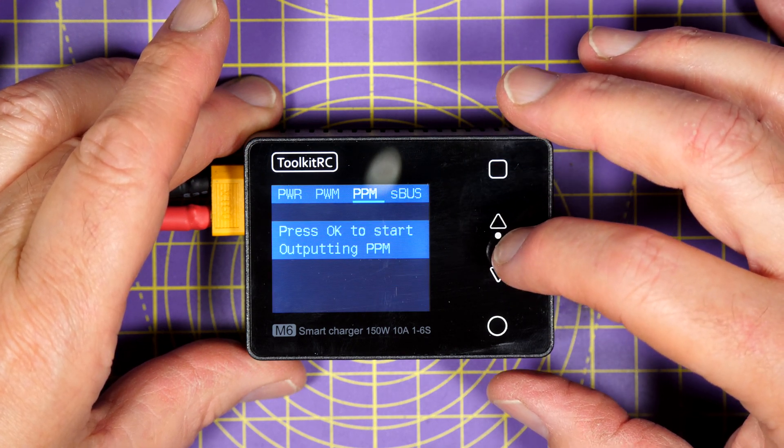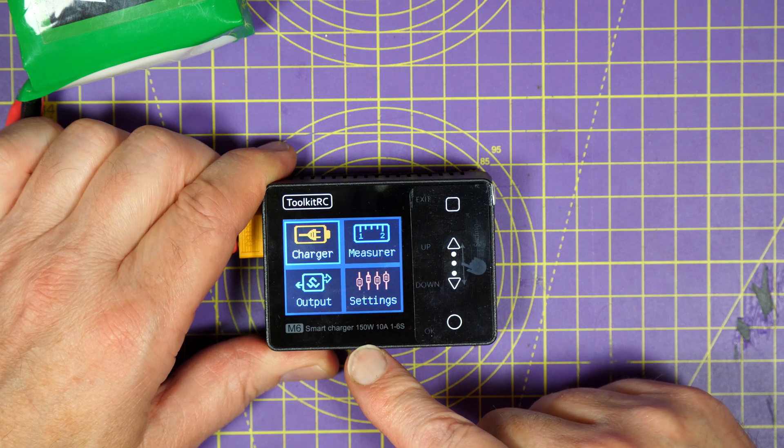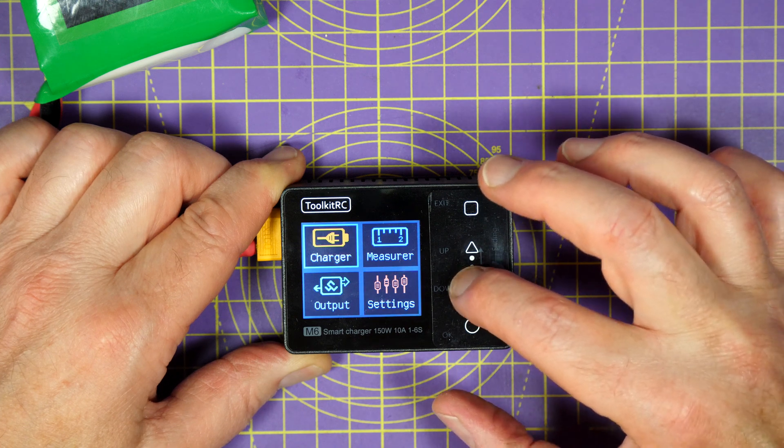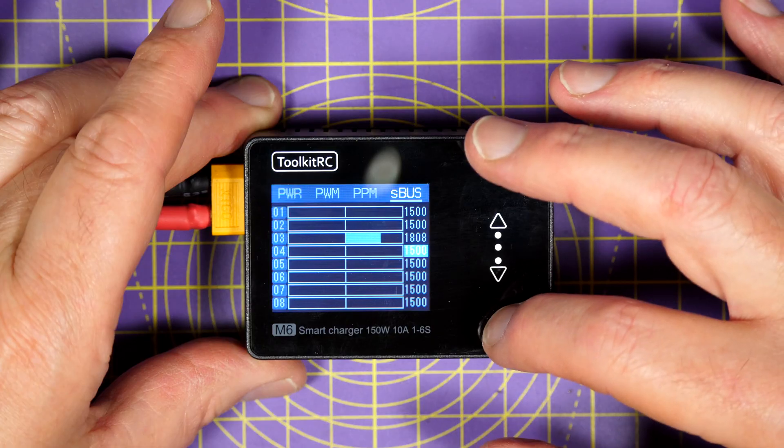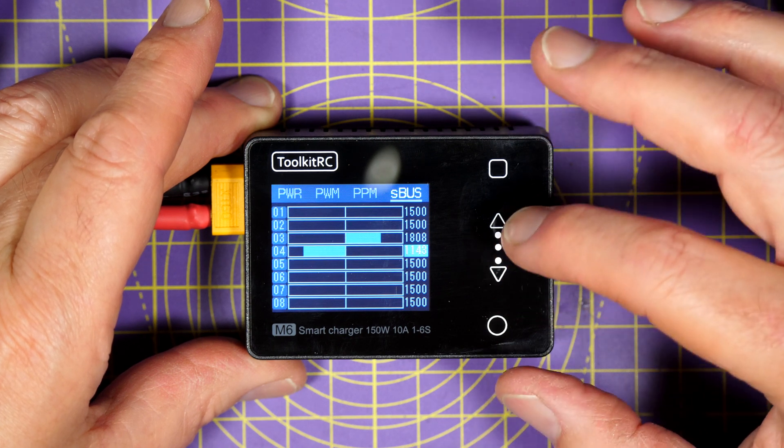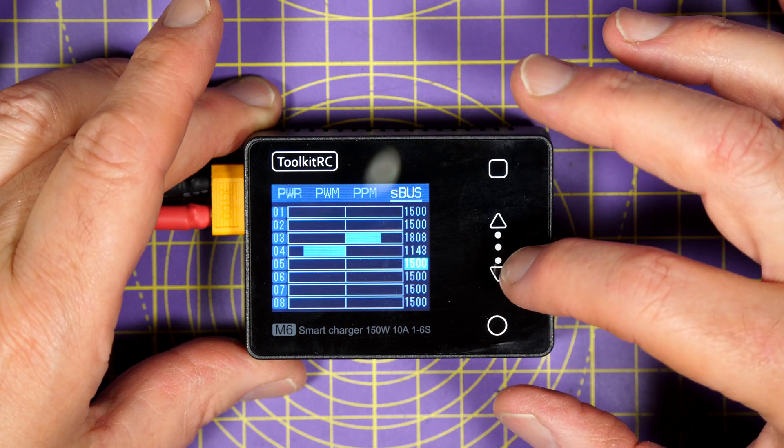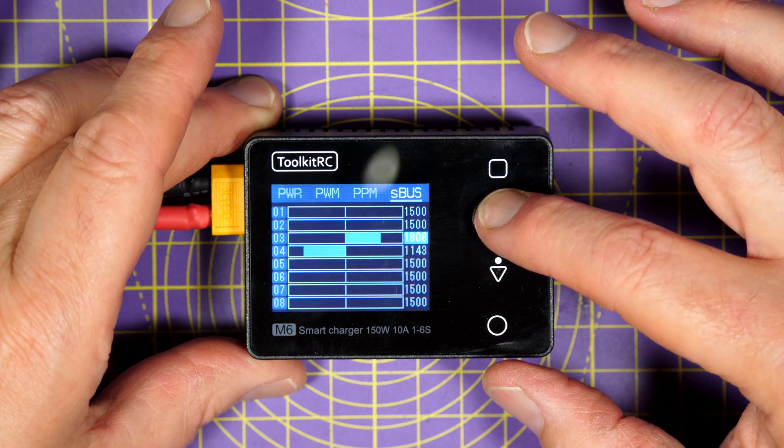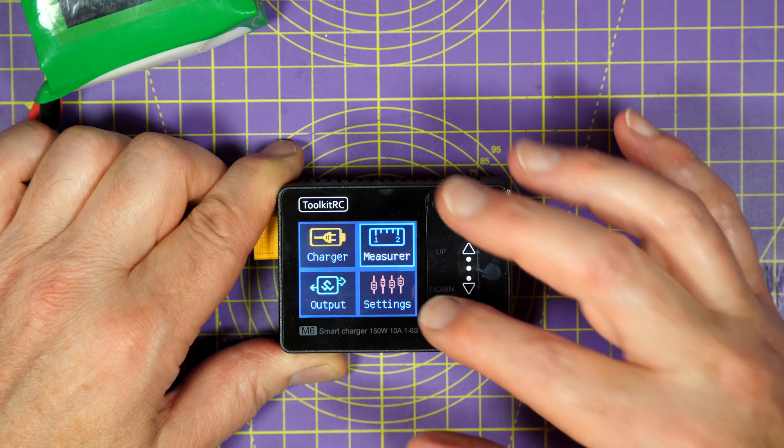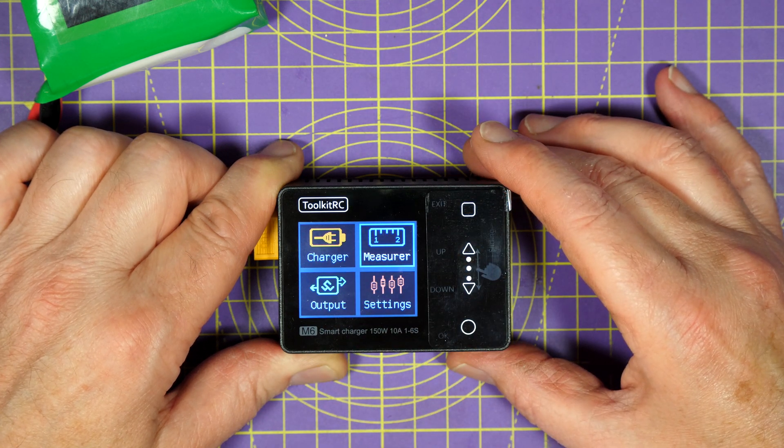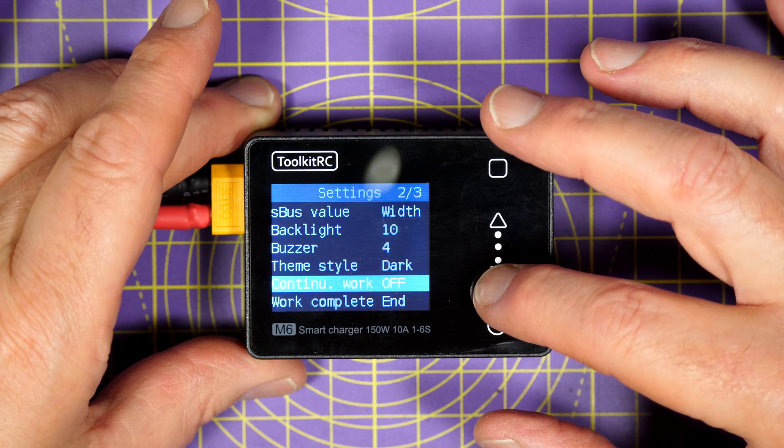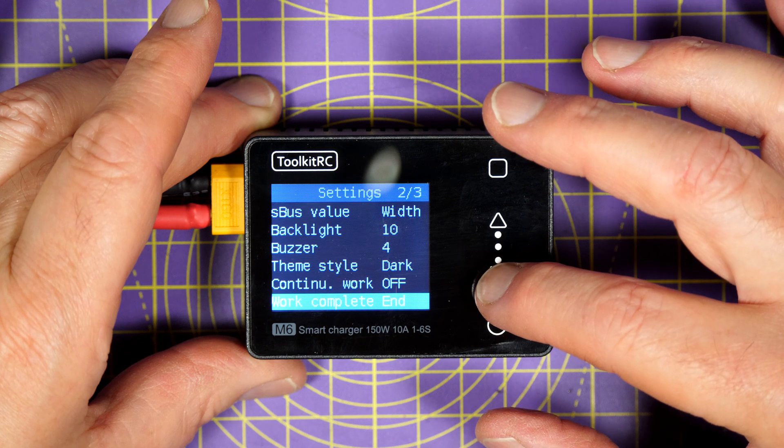And it does more. You can use it to measure PWM, PPM and SBUS signals. It's like a little oscilloscope. It's very good. So it means you can see if your receiver is sending the correct signals, for example. It's a very good debugging tool to have with you when something isn't working when you're out in the field. And if you check out my review of the M8 for full details of all these functions, it's exactly the same as this.